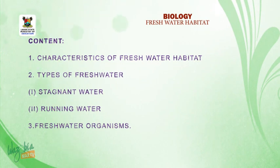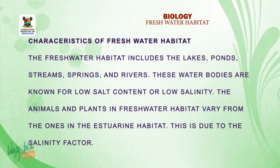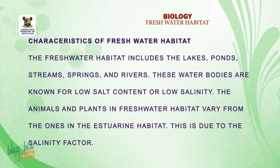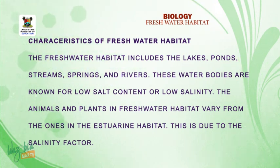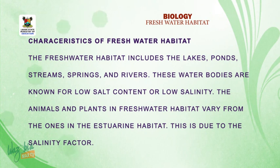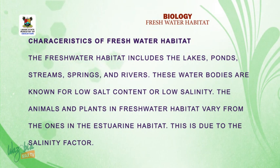Now let's look at characteristics of freshwater habitat. The freshwater habitat includes lakes, ponds, streams, and rivers. These water bodies are known for low salt content and low salinity. It means that the content of salt in that kind of body of water is very, very mild.